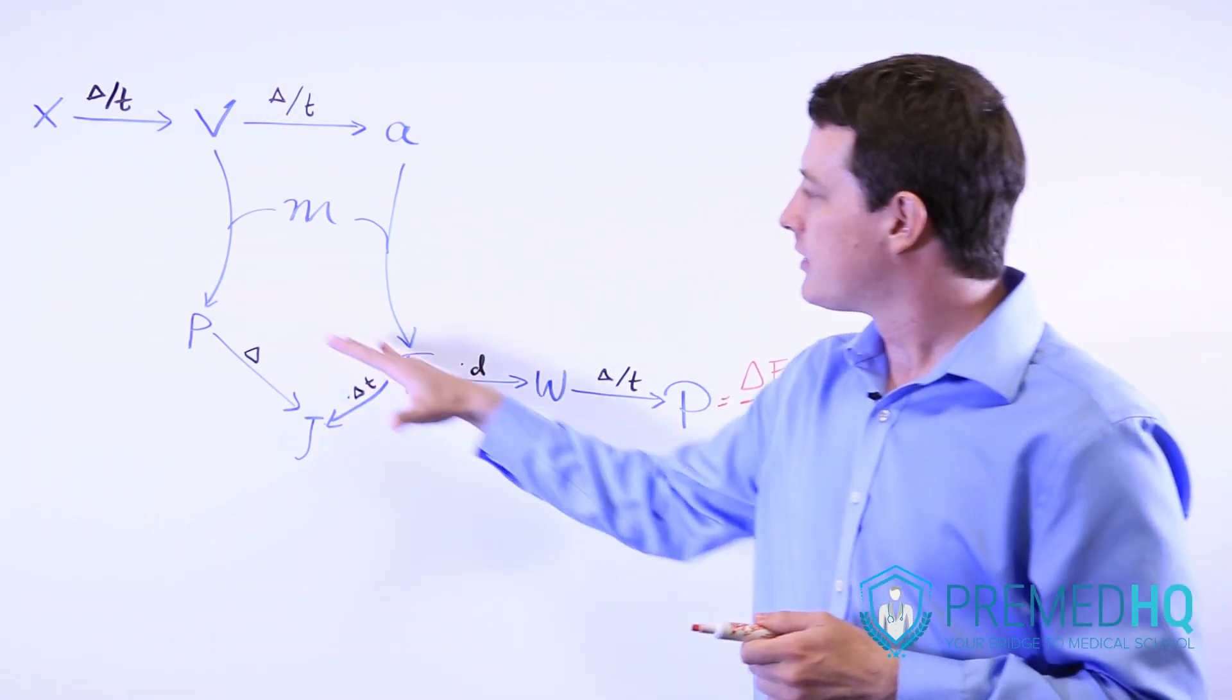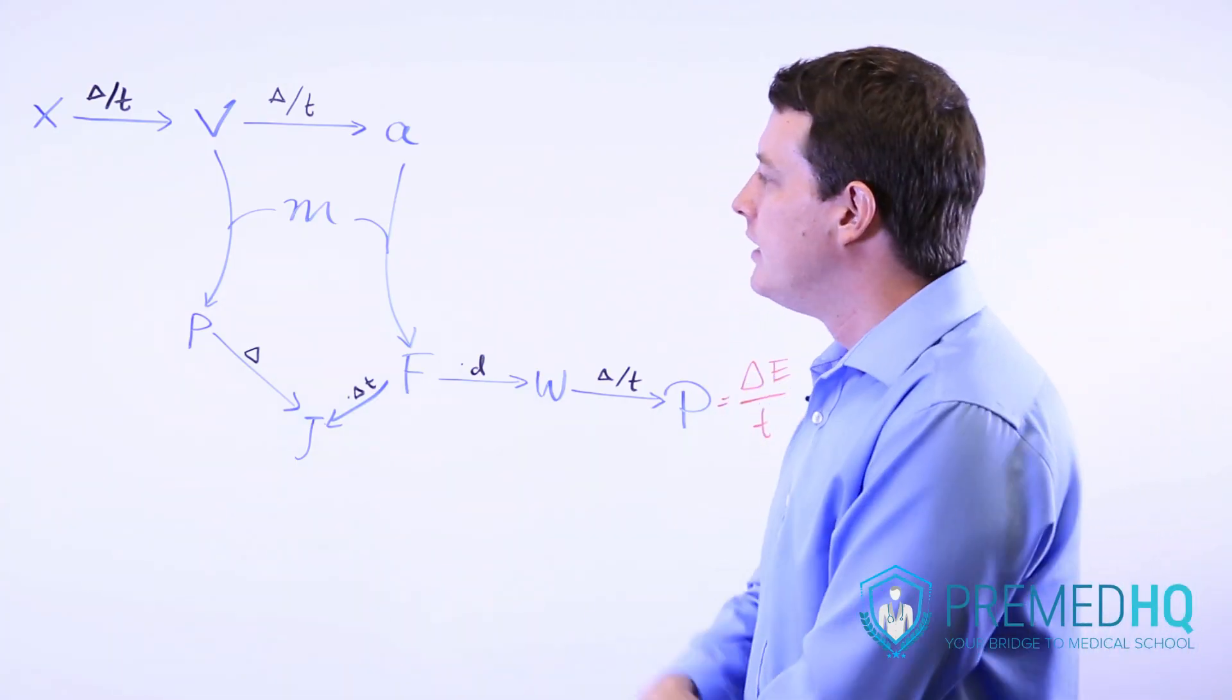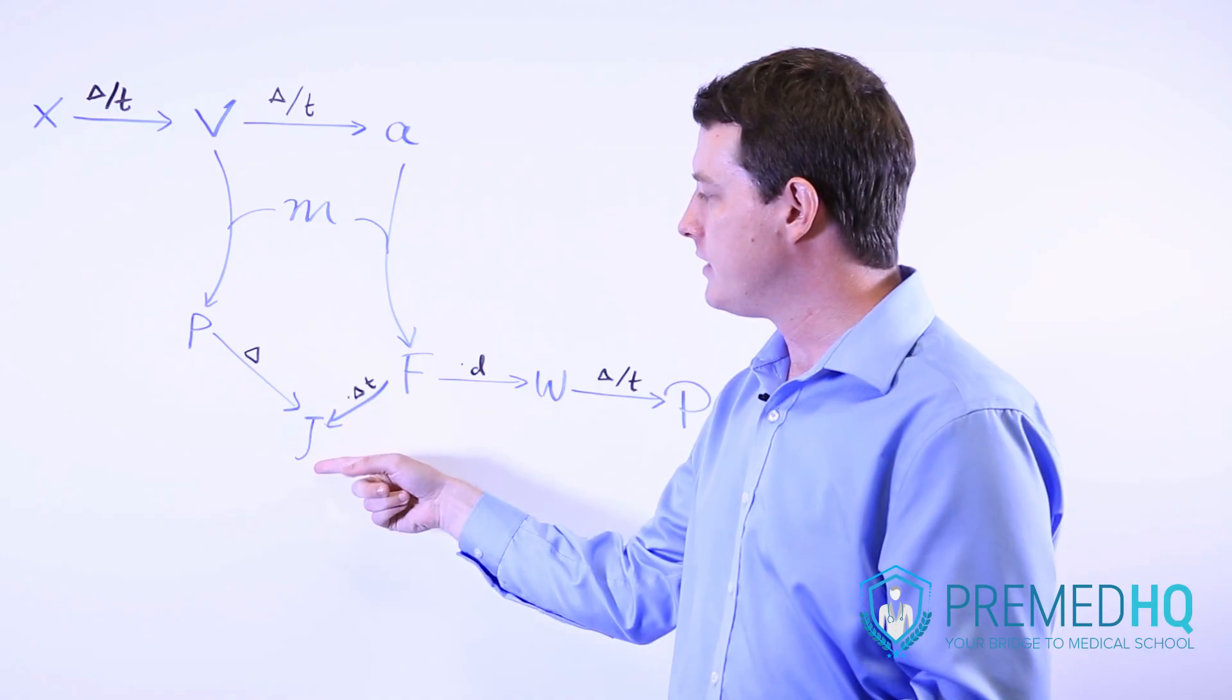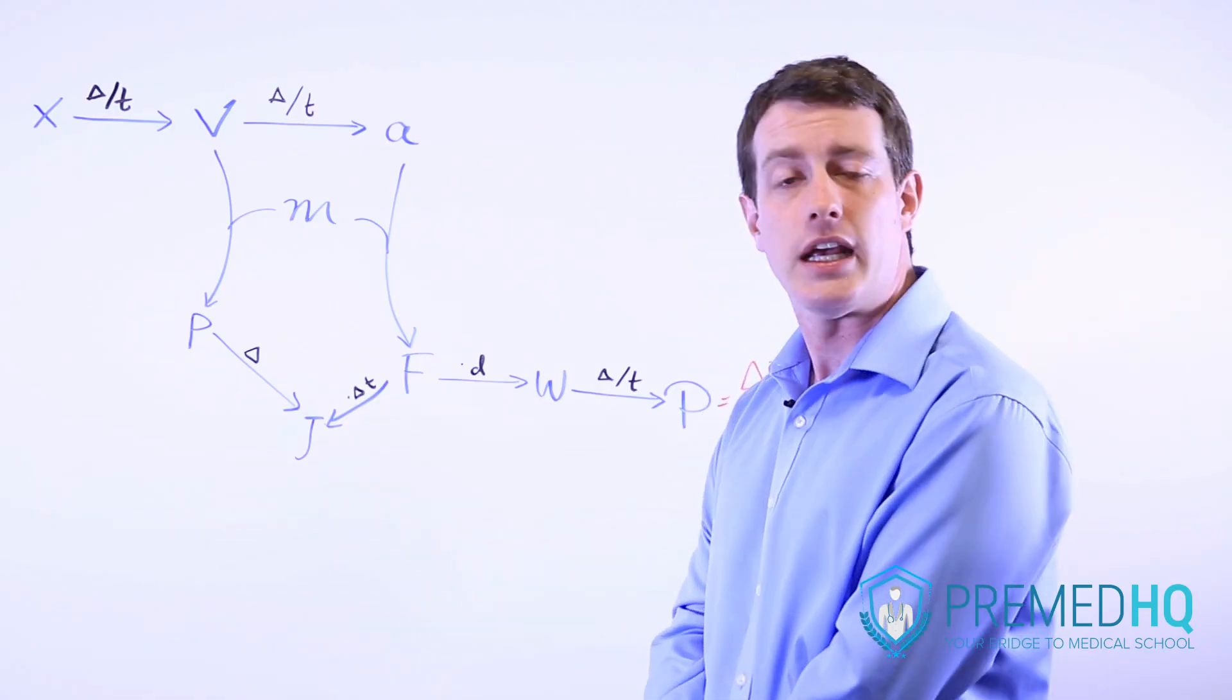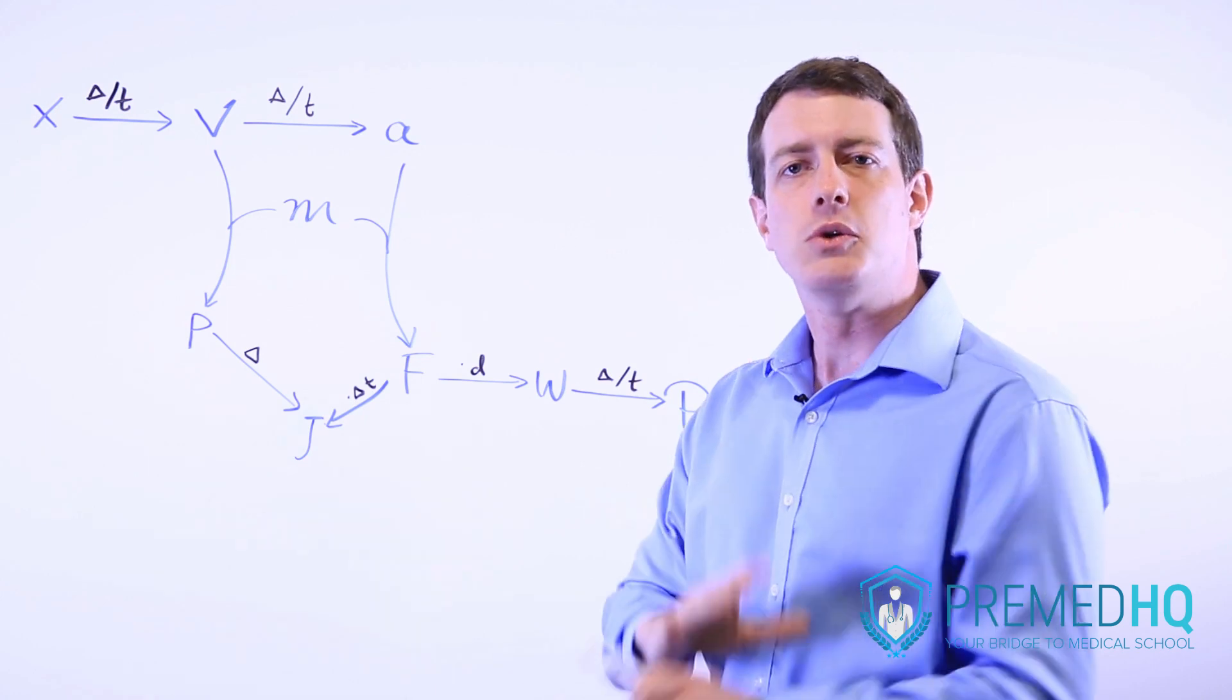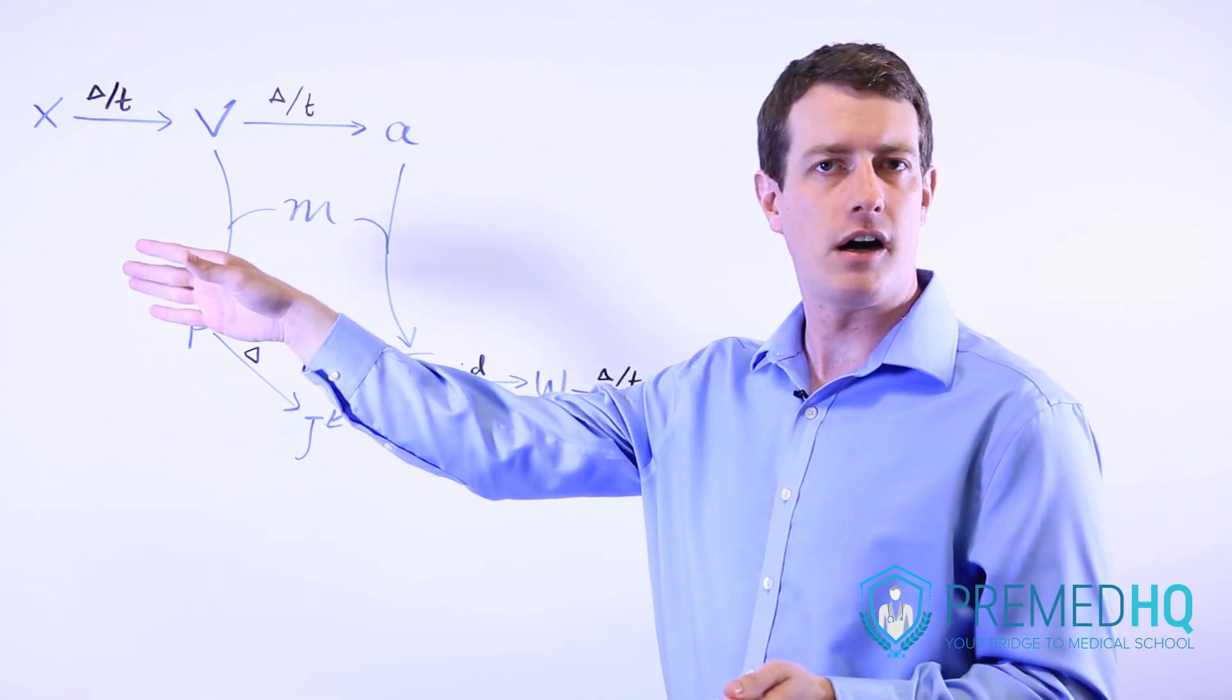Now these are some of the less common formulas that you'll encounter, but they will definitely be very relevant for the MCAT. The change in momentum is equal to the impulse. So impulse, which is listed here as J, is equal to the change in momentum created by some object. It could be a ball that's bouncing off of a wall.